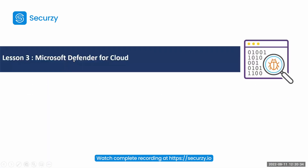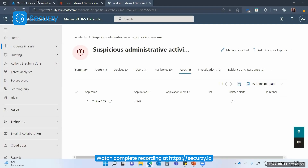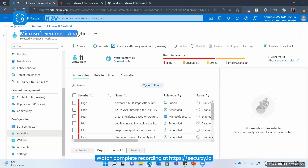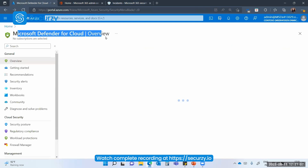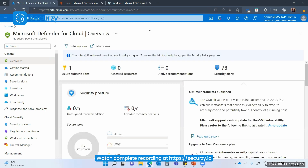The next and last solution is Microsoft Defender for Cloud. Note that Microsoft 365 Defender and Microsoft Defender for Cloud are different services — both are different. For Microsoft Defender for Cloud, we move back into the Azure portal at portal.azure.com, the same portal used for Microsoft Sentinel. Microsoft Defender for Cloud is basically providing cloud posture management.